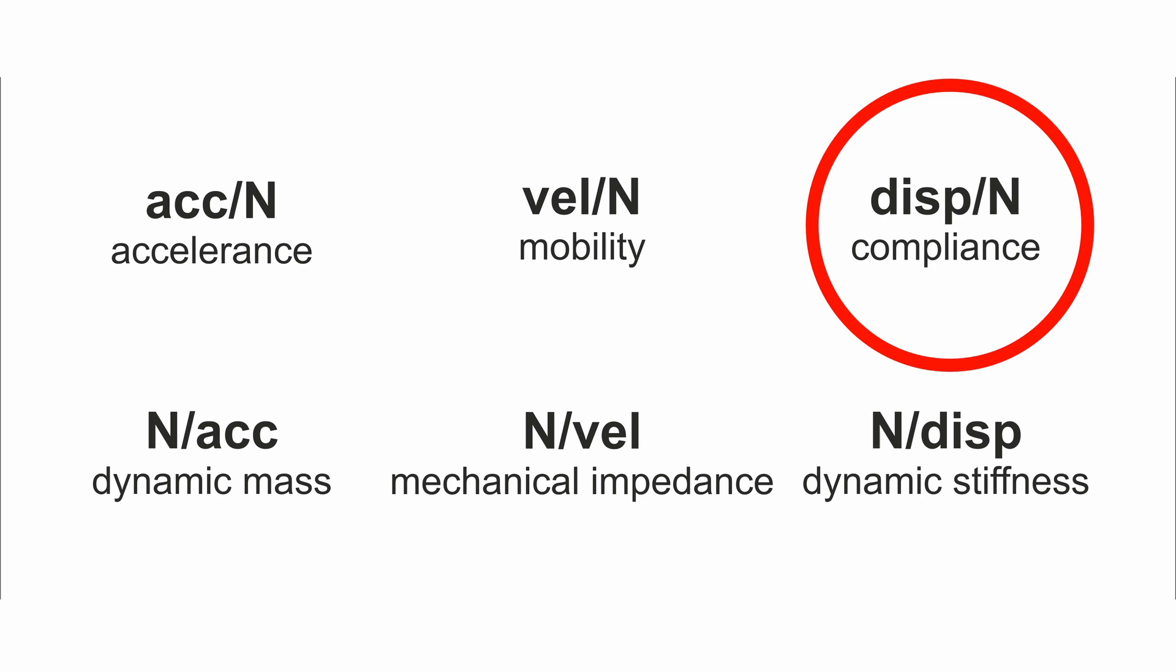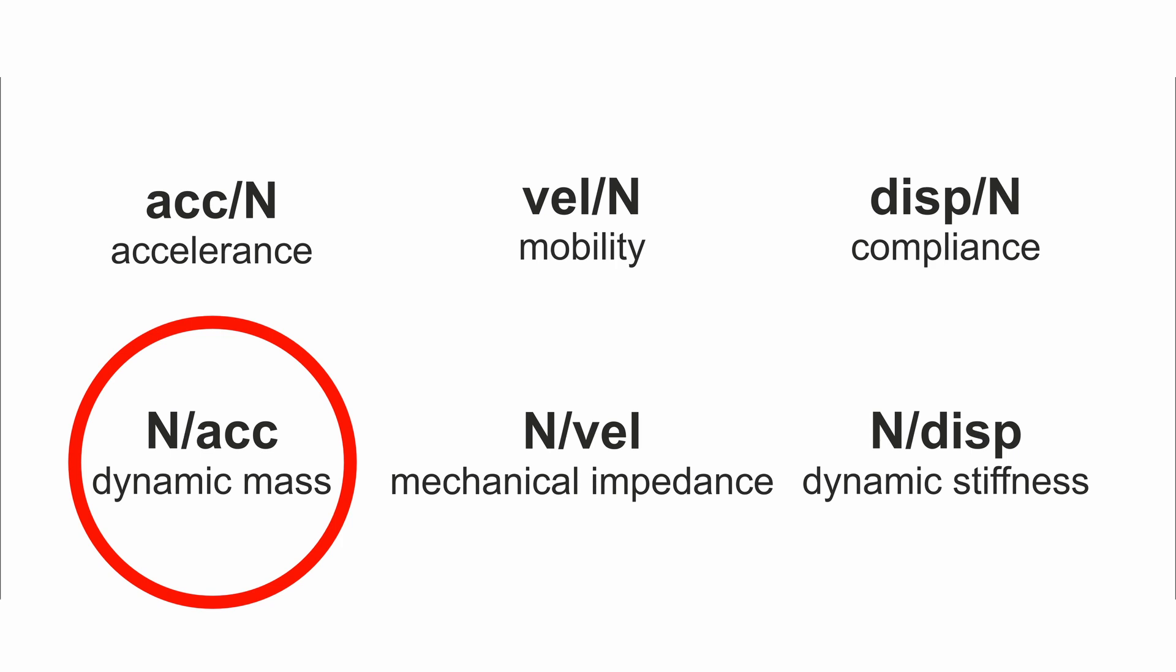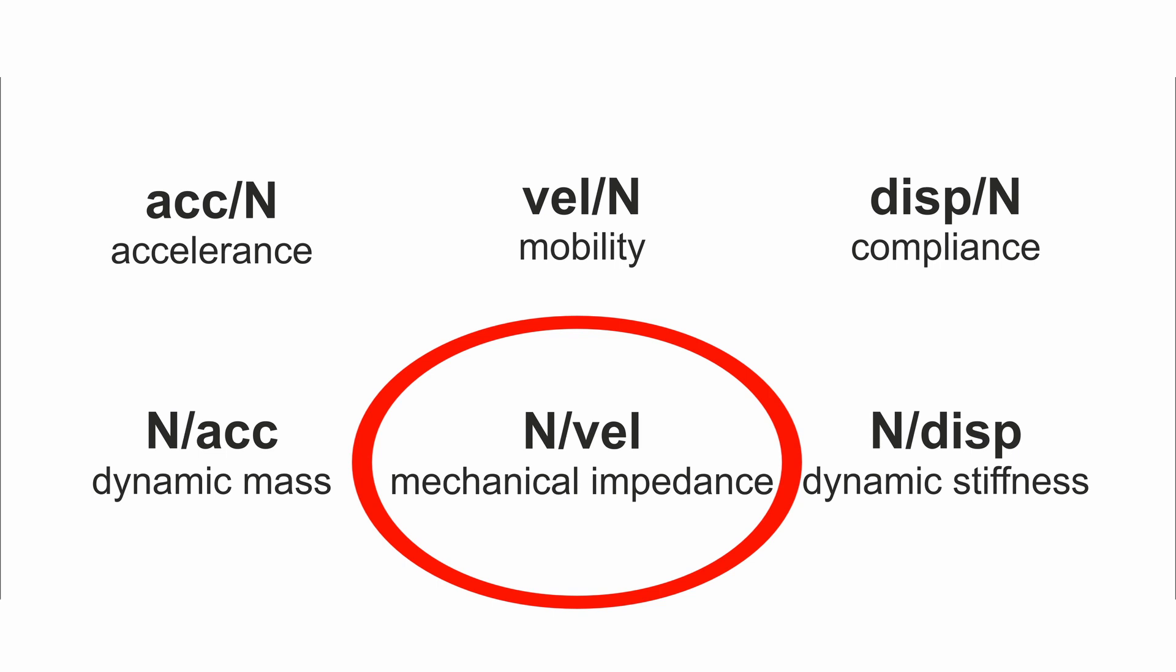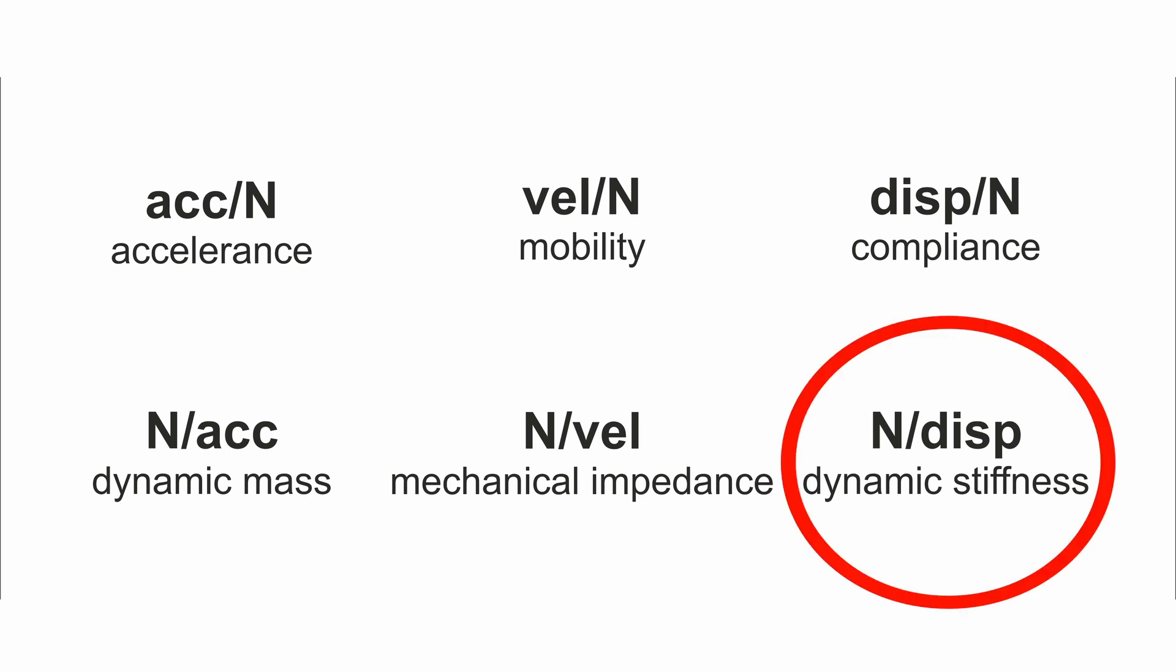Also the inverted functions are used. We talk about dynamic mass for acceleration, mechanical impedance for velocity and dynamic stiffness for displacement. All these FRF are available with any type of sensor. We can use the acceleration sensor and we can just recalculate FRF to velocity and displacement. All recalculations are just integrations or derivations.